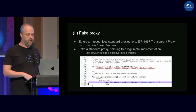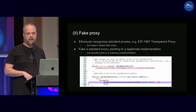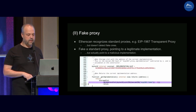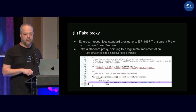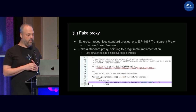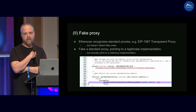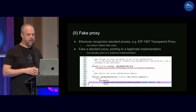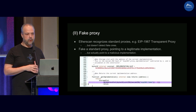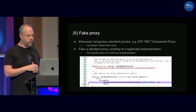Another form of attack is using a fake proxy. Etherscan has a nice feature where it recognizes standard proxies like EIP-1967, it recognizes transparent proxies, and shows you the implementation. It's common to rely on that. It's great for UX but not so great for security, because there is no way to detect fake proxies — proxies that seem to point to a legitimate implementation but actually use a different implementation.